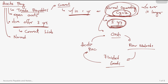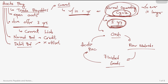Since accounts payable is a liability, its normal balance is credit. However, if there is an overpayment, a debit balance in accounts payable may arise. This debit balance must not be offset against other credit balances. Instead, it should be presented as part of current assets — specifically, as part of current receivables.